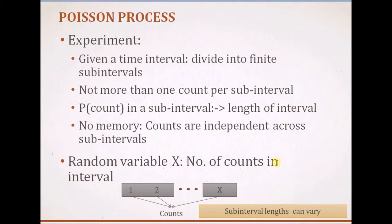Thus, if it has these three properties — first, there is only a chance of one event per sub-interval; second, the probability of this event per sub-interval is proportional to the length of the interval; and third, the events in each sub-interval are independent of events in the other sub-intervals — then the random variable we are measuring is the number of events per the whole interval. We select a time duration t to measure the number of events, and this interval can be replaced by any other independent variable such as space, depending on the process.